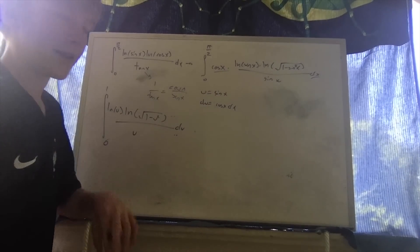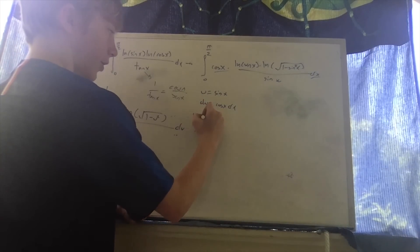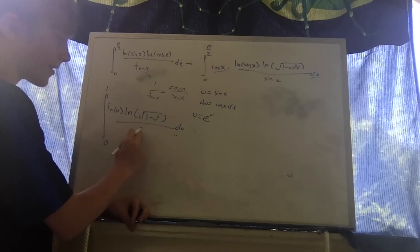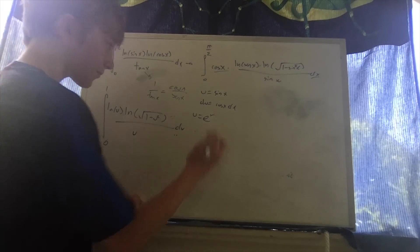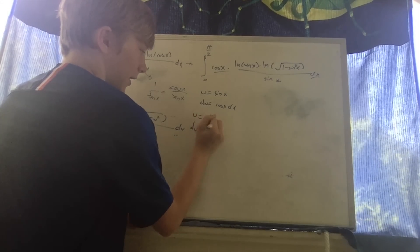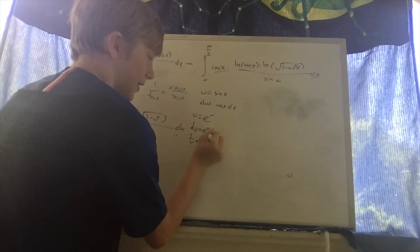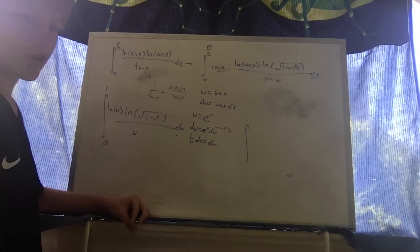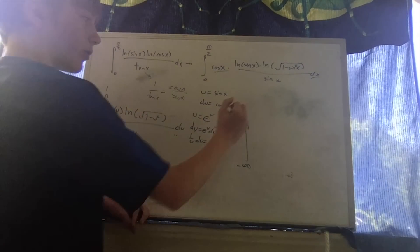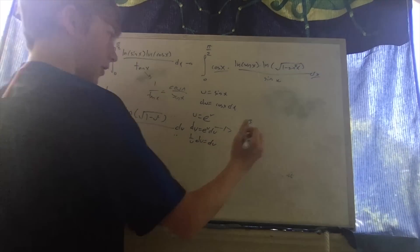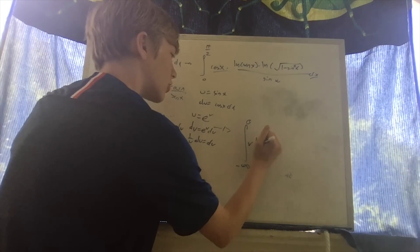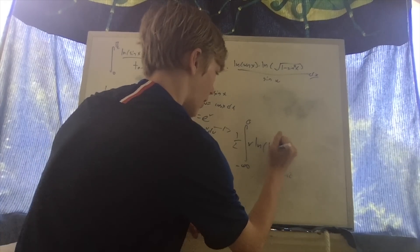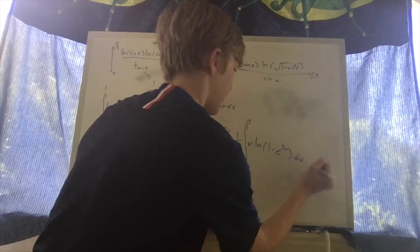Now we make the substitution u = e^v. This turns ln(u) into simply v, and (1/u) du becomes dv — very convenient. So du = e^v dv, meaning (1/u) du = dv. The new bounds: ln(0) = -∞ and ln(1) = 0, giving us the integral from -∞ to 0. The ln(√(1 - u²)) becomes (1/2) · ln(1 - e^(2v)) dv, pulling the 1/2 out front.